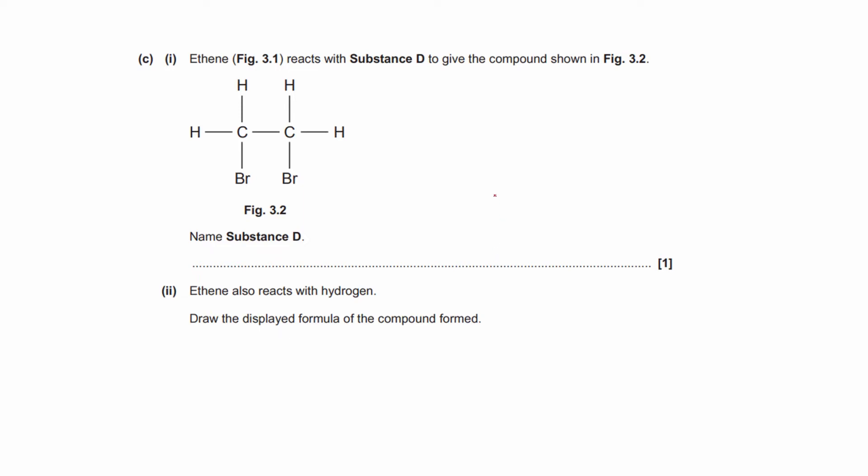Part C-i. Ethene reacts with substance D to give the compound shown in figure 3.2. Name substance D. So ethene is what we had before, carbon-carbon double bond, and then we've got hydrogen here and bonded to hydrogen there. So this is ethene. This reacts with substance D to give that. So it's asking what is that substance that it reacts with. It's important to read questions carefully because it's not asking you to name this compound. It's asking you to name the substance D that it reacts with.